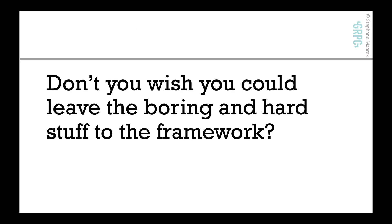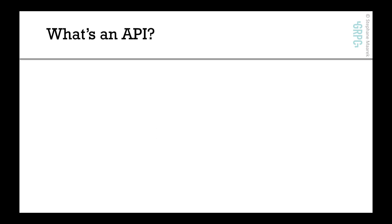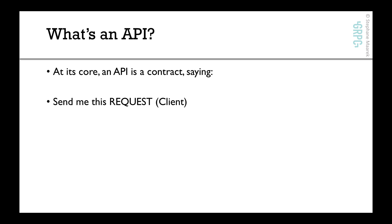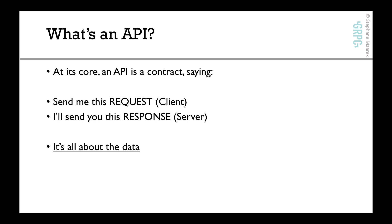Don't you wish there was some framework that solved all the boring and hard stuff and only left you the fun stuff? Well, yes — that framework is gRPC. So what's an API at its core? An API is a contract saying: send me this request and I'll send this response. That's what an API should be. It's all about the data and nothing else. In the rest of this course, we'll relieve everything else — the hard stuff — to the gRPC framework.